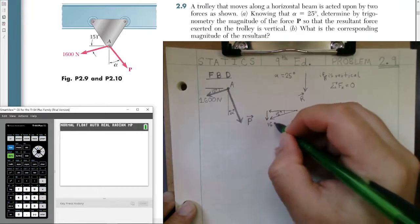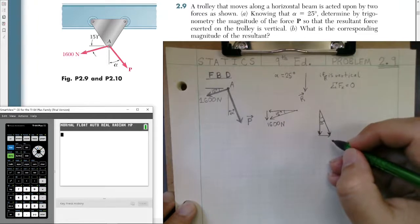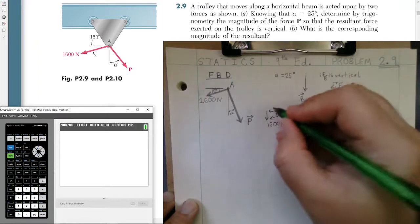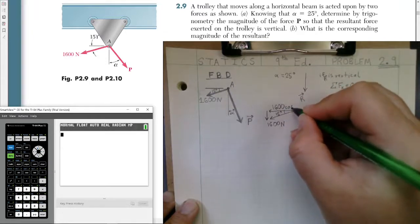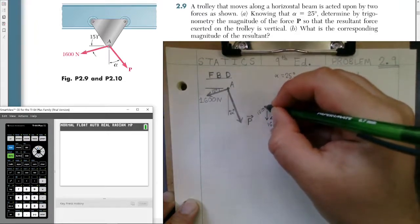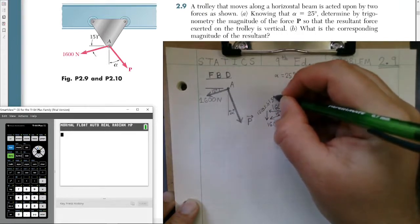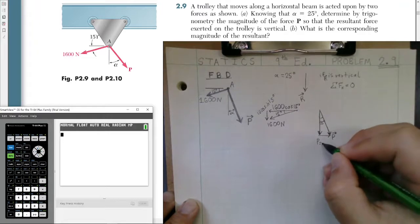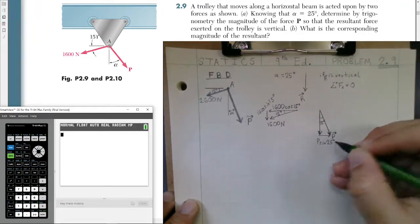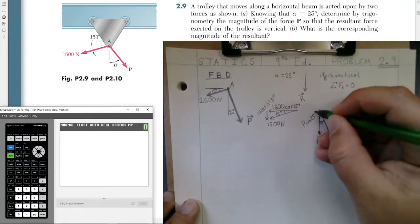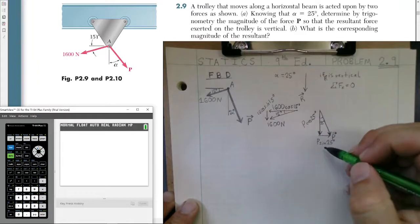So the 1600 newtons force will be here. Our P vector, we're trying to solve for. Now, for components, we know that the 1600 newtons force will have an x component of 1600 times the cosine of 15 degrees, as well as a vertical component of 1600 newtons times the sine of 15 degrees. Our P vector will have a horizontal component of P times the sine, not cosine, sine of 25 degrees. And our vertical vector will have P times the cosine of 25 degrees. And again, I just derive these from basic trigonometric functions of cosine and sine.